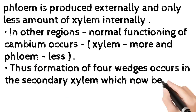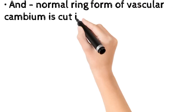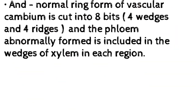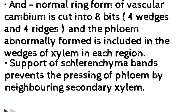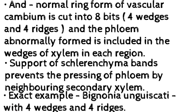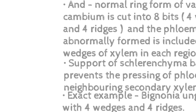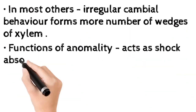In other regions, normal functioning of cambium occurs — more xylem and less phloem. Thus, four wedges form in the secondary xylem, which becomes cross-shaped due to the pushing of xylem in the normal regions. The normal ring form of vascular cambium is cut into eight parts: four wedges and four ridges. Phloem is abnormally formed as included phloem within the wedges of xylem. Sclerenchyma bands prevent the pressing of phloem by neighboring secondary xylem.